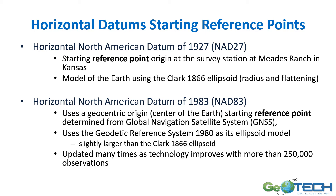The North American Datum of 1927 is based on a reference point in Kansas — a survey station at Meade's Ranch — and that is the starting point from which everything is measured. It also uses a model of the earth which is the Clarke 1866 ellipsoid, and that gives us the shape and size of the earth for that particular datum.